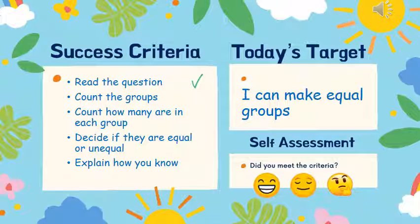So today's target is: I can make equal groups. You need to read the question, count the groups, then count how many are in each group, decide if they are equal or unequal. It might be that you have to say how to make them equal if they are unequal, and explain how you know, so you have to work them out in order to explain.